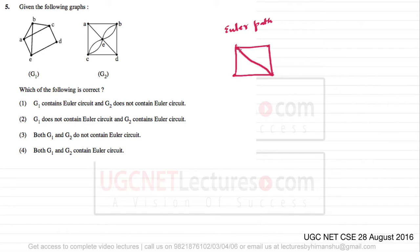You can visit a vertex more than once, but you have to visit an edge exactly once. So an Euler path means you start from a vertex and visit all the edges exactly once. For this graph, the Euler path does exist.